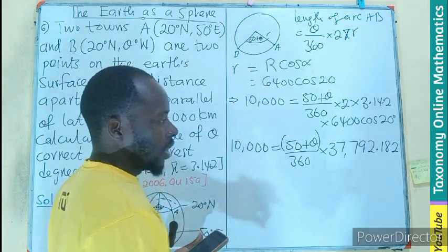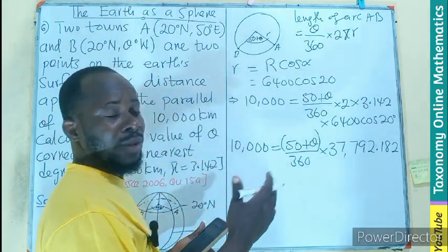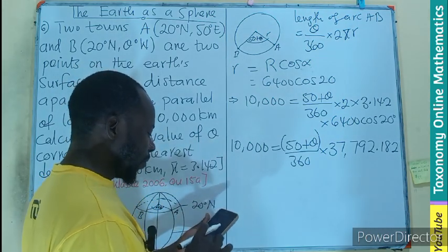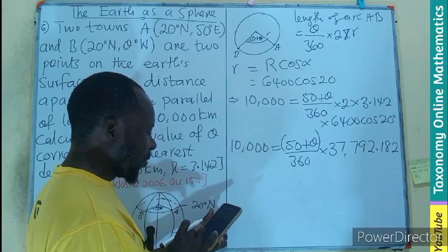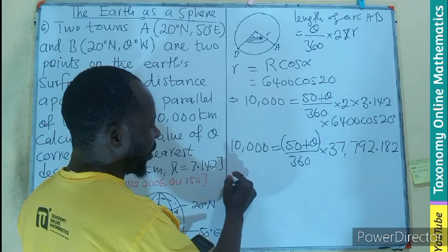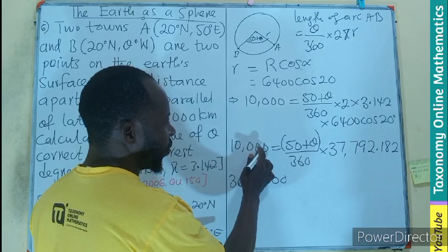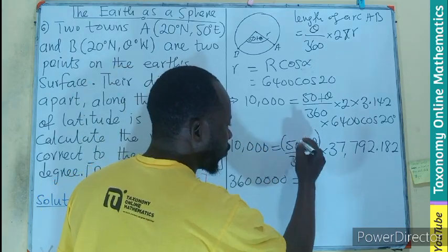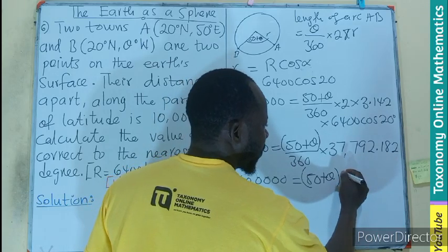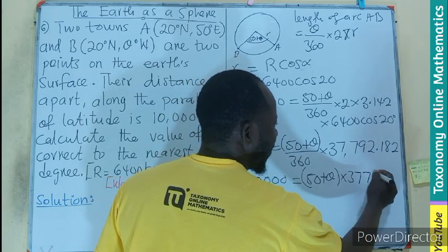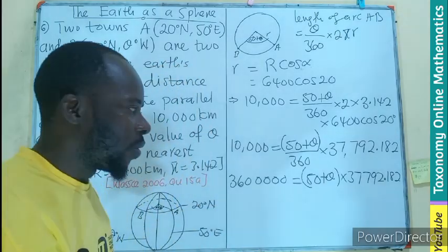Don't forget, this 50 plus theta will be multiplying this 37,792 divided by 360. So it means we can multiply through by 360 to have our 360 times the 10,000. So this is going to be 3,600,000 equals to our 50 plus theta multiplying 37,792.182. What does that mean? This becomes the coefficient multiplying the bracket.